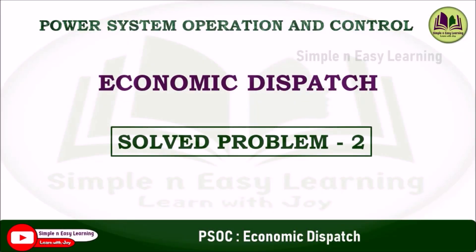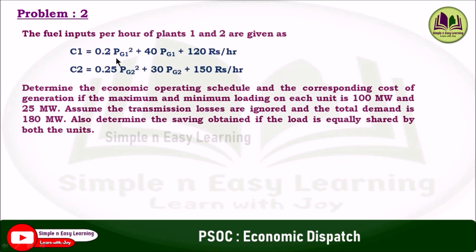Economic dispatch solved problem 2. In the exam point of view this problem is very important. The fuel input per hour of plant 1 and plant 2 are given as C1 equal to 0.2 PG1 square plus 40 PG1 plus 120 rupees per hour, and C2 is 0.25 PG2 square plus 30 PG2 plus 150 rupees per hour. Determine the economic operating schedule and the corresponding cost of generation if the maximum and minimum loading on each unit is 100 megawatt and 25 megawatt. Assume transmission losses are ignored and the total demand is 180 megawatt. Also determine the saving obtained if the load is equally shared by both the units.